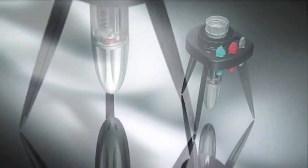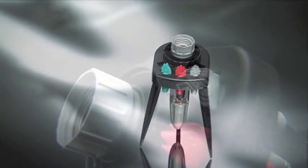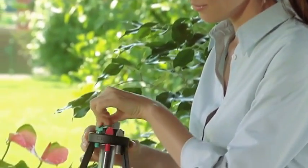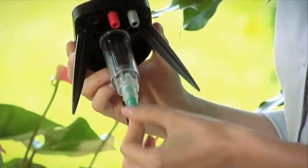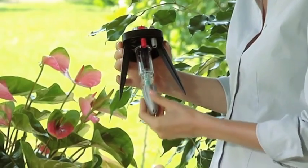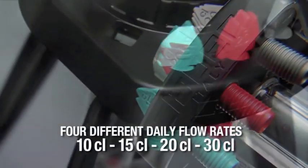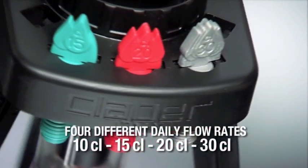Idris comes with 4 drippers, one of which already fitted and ready to use. These are just like the drippers used in micro-irrigation systems. Easily interchangeable, colour-coded for immediate identification, and marked with the daily flow rate: 10, 15, 20 and 30 centiliters.